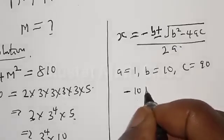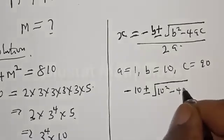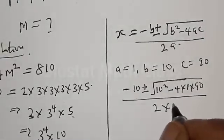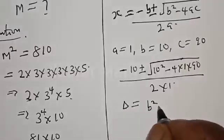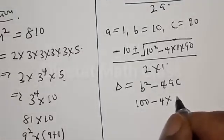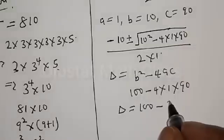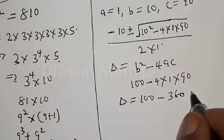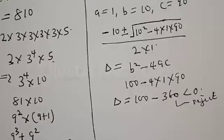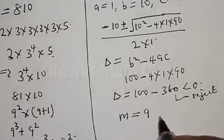Therefore we have minus 10 plus or minus square root of 10² minus 4 multiplied by 1 multiplied by 90, over 2 multiplied by 1. The discriminant b² minus 4ac equals 100 minus 4 times 1 times 90, which gives 100 minus 360, and that is less than zero. So we reject this case. Therefore the only root we have is M equals 9.